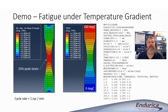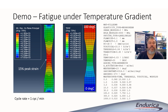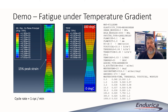Let's do an example. This is a tension dumbbell, and it's going to be cycled from 0 to 15 percent peak strain, as shown on the left-hand image. As shown in the middle image, one end of the specimen — the top grip — is heated to 100 degrees Celsius, while the other grip at the bottom is cooled to a constant 0 degrees Celsius. We're going to cycle this specimen at the rate of one minute per cycle, which means that about 10,000 cycles is equal to a week of exposure time. On the right-hand side of the slide, I've listed out the material property definition used to define the aging properties of the rubber compound.